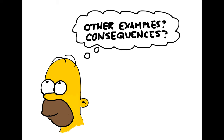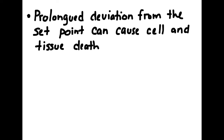Before we move on, see if you can think of other examples of homeostasis and also think about the consequences of deviating from a set point for too long. Hopefully you've figured out that prolonged deviation from an ideal set of conditions can cause both cell, tissue, and organism death.